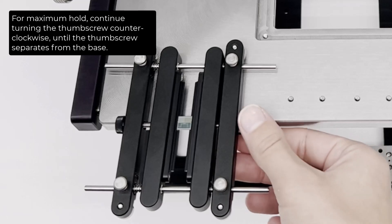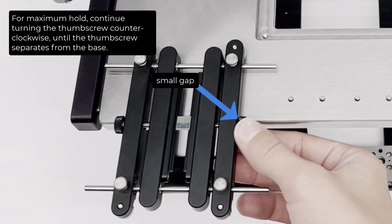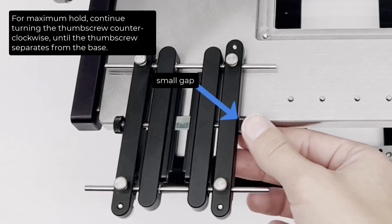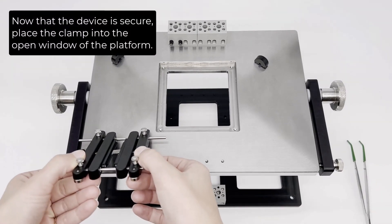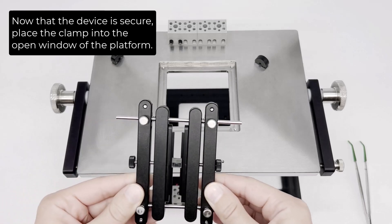For maximum hold, continue turning the thumb screw counterclockwise until the thumb screw separates from the base. Now that the device is secure, place the clamp into the open window of the platform.